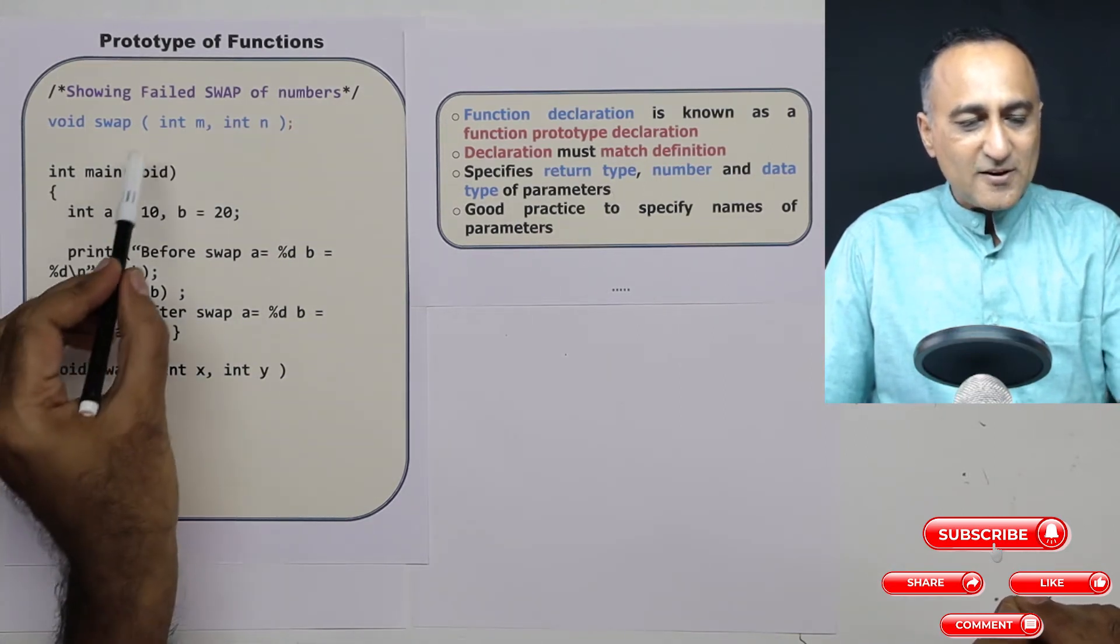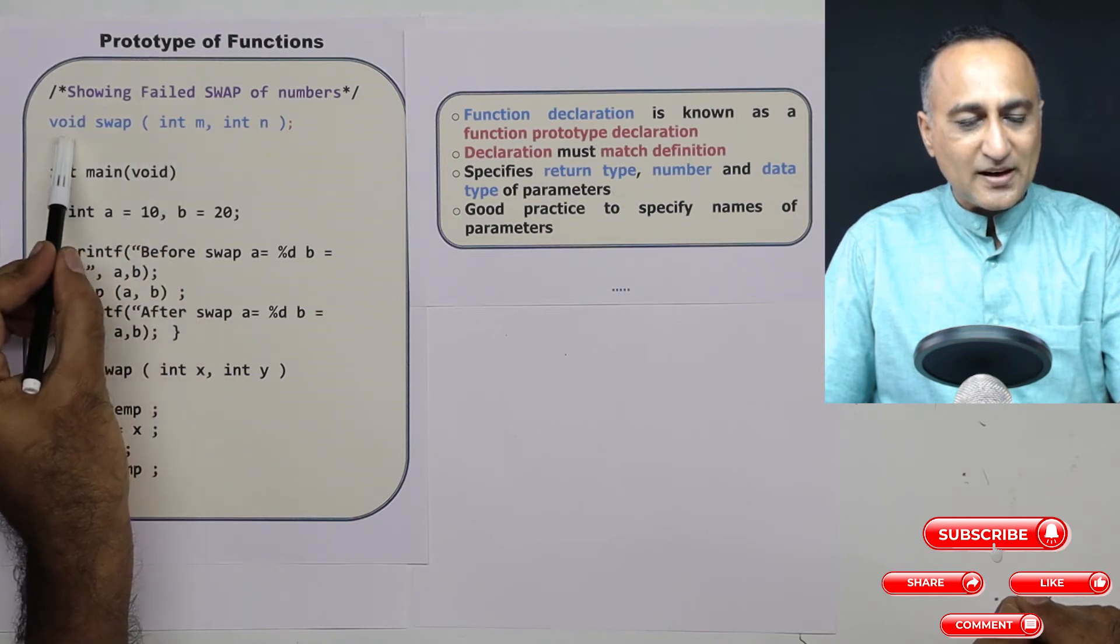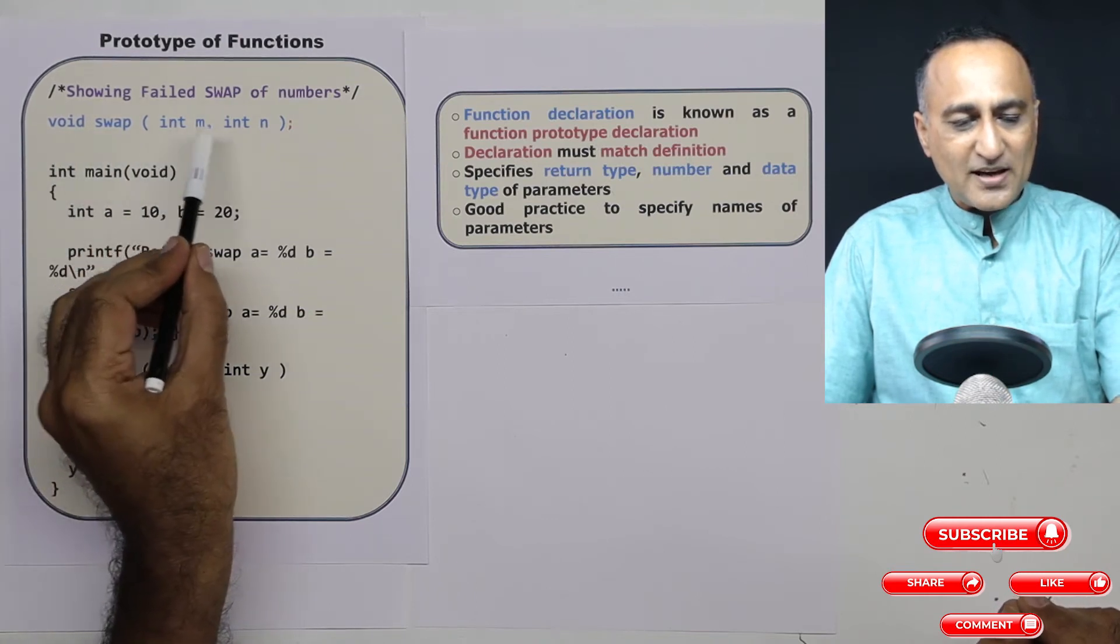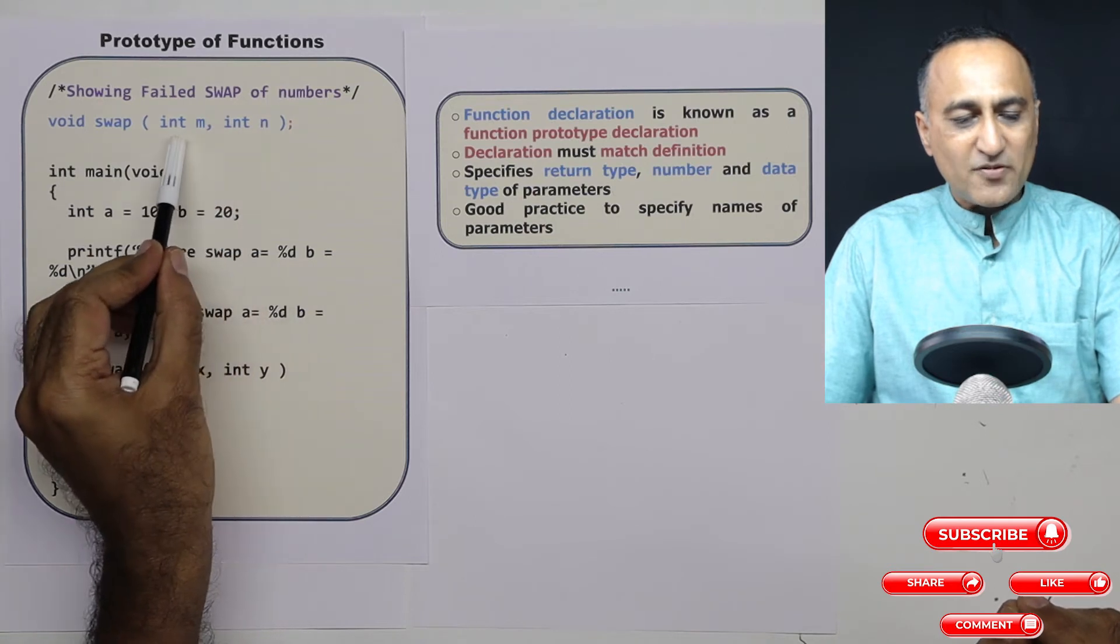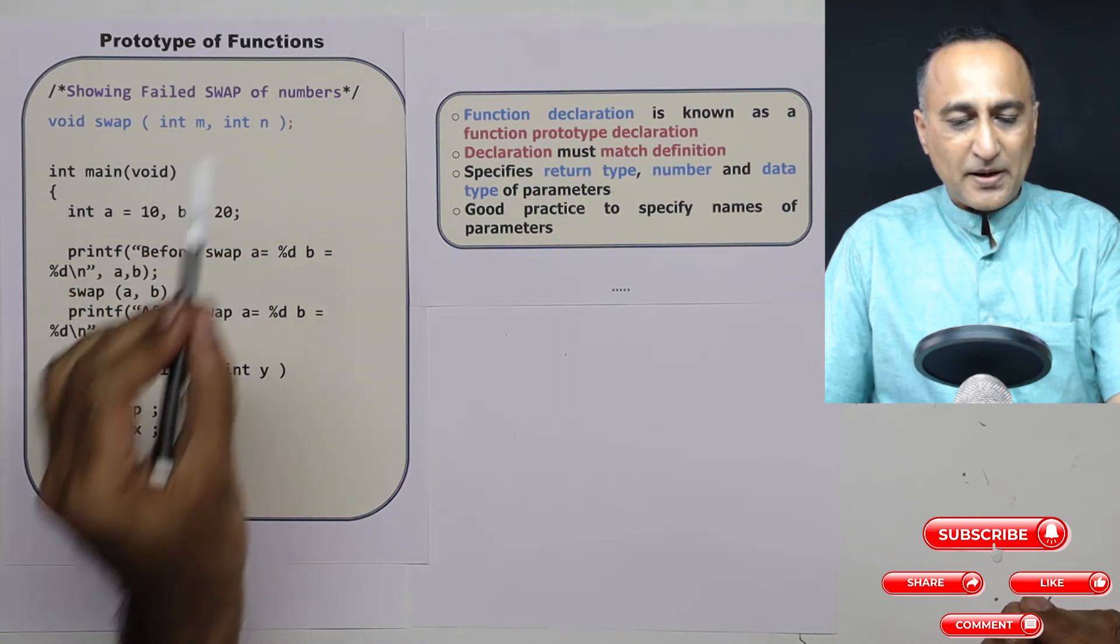So if you see here in the function prototype, I am specifying the return type, I am specifying the number of parameters that is two, and I am specifying the data type of the parameters.